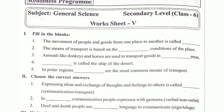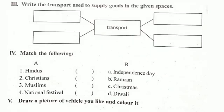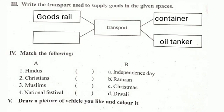Look here — write the transport used to supply goods in the given spaces. The answers are: container, oil tanker, goods rail, and flights. These are the types of transport used for goods.